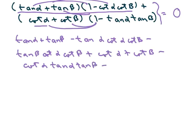So we're doing this next part, minus cotan of beta times tan of alpha, tan of beta. All I did was foil here.